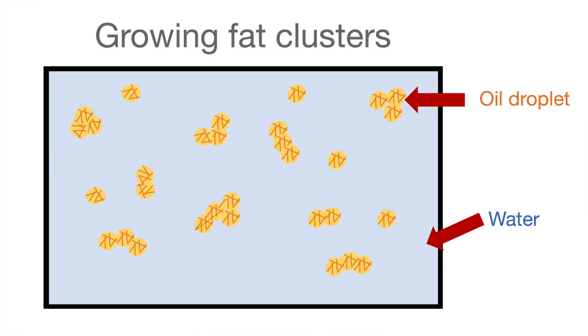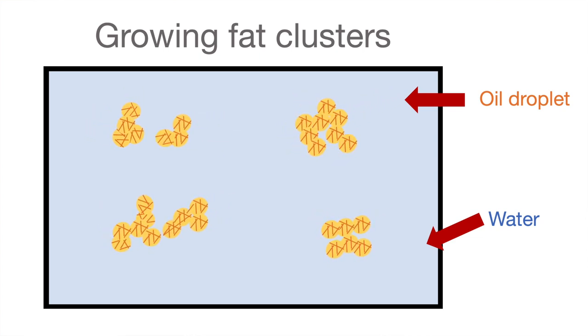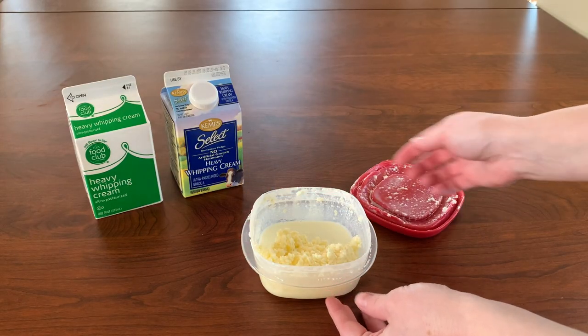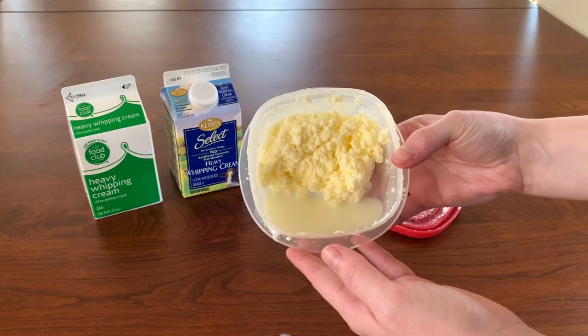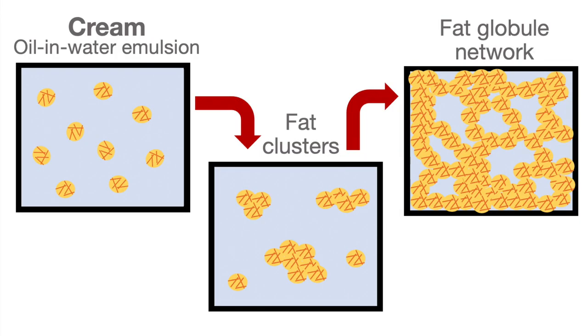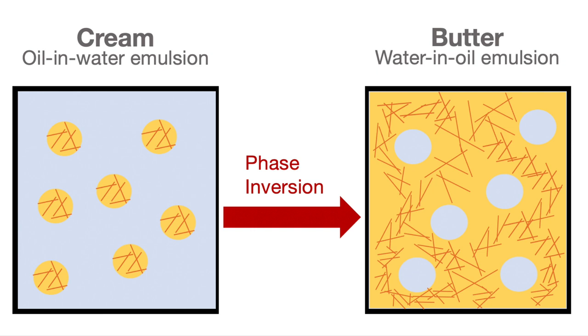It will probably take three to four minutes of shaking before you start to see clusters of oil droplets. Once we can see these fat clusters with the naked eye, we call them butter grains. The butter grains start small, but grow bigger as we keep shaking, causing granules to collide with one another. Eventually enough of them come into contact and form a huge network of fat called a fat globule network. This structure is so strong it starts to hold in water droplets — this is really the phase inversion step, where the fat is now the continuous phase and the water droplets are now the dispersed phase.